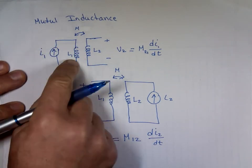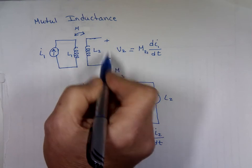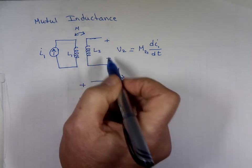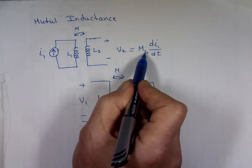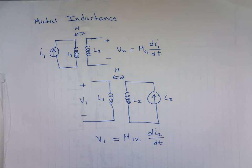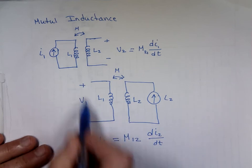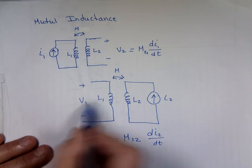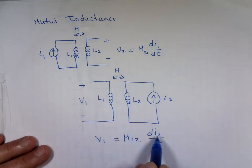If we have a current going through L1 and L2 is right next to it and the mutual inductance is given, then the voltage on L2 is going to be the mutual inductance M21 times di/dt of that current. If I2 is going through L2, then V1 is going to be M12 times the derivative of that current — because that current is going through the other inductor.